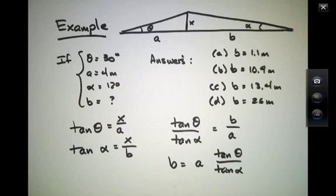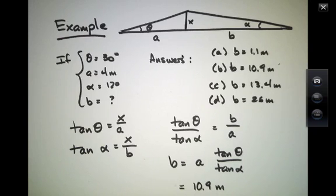If I use my calculator and plug in 4 meters for A and the 30 degrees for theta and 12 degrees for alpha, I find that B is approximately 10.9 meters. So the correct answer amongst our four choices is B.